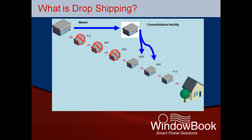Just to quickly review from our basics webinar, dropshipping bypasses a number of postal transportation and processing steps. Mail is typically dropshipped to one of the following types of postal facilities: a network distribution center, or NDC — formerly known as bulk mail centers — an auxiliary service facility, or ASF, a sectional center facility, or SCF, an area distribution center, or ADC, and a destination delivery unit, or DDU.